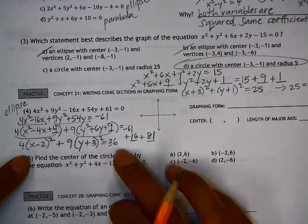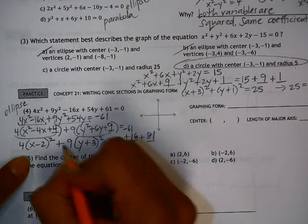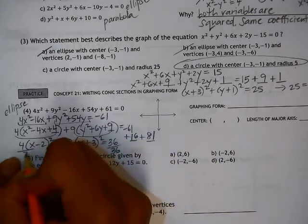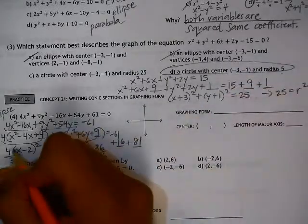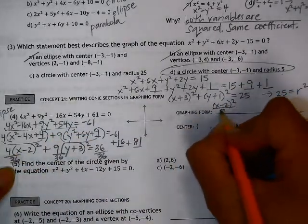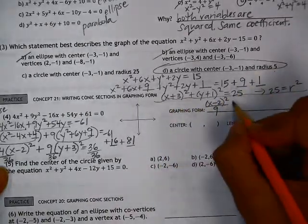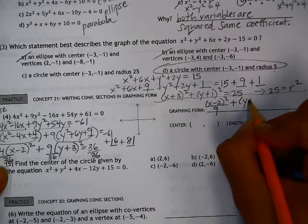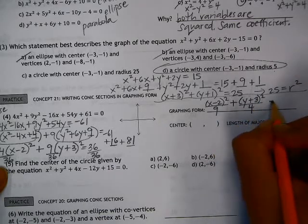Now to get this in graphing form, we do need the right side of the equation to equal 1. So the last step here is to divide everything by 36. And I'm going to write graphing form over here. This reduces to 1 over 9. So x minus 2 squared over 9 plus, and then we have y plus 3 squared over 4 equals 1.